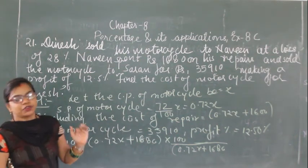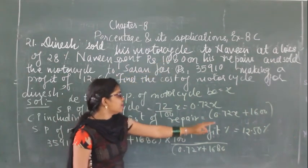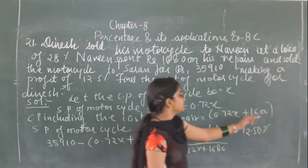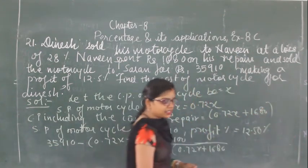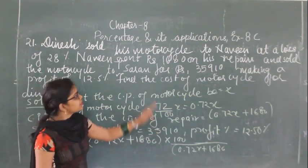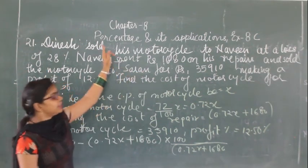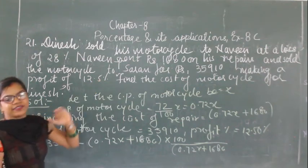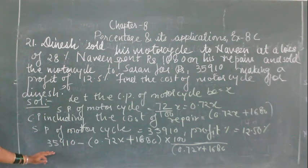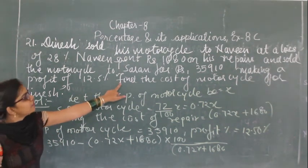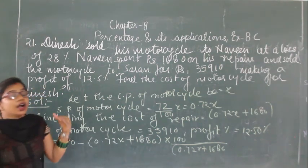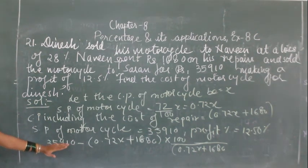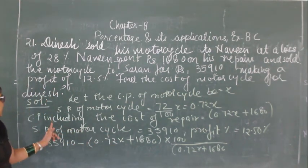Let the cost price of the motorcycle be X. The selling price of the motorcycle at 28% loss is 72 upon 100 into X, which equals 0.72X. The total cost including repair is 0.72X plus 1,680.